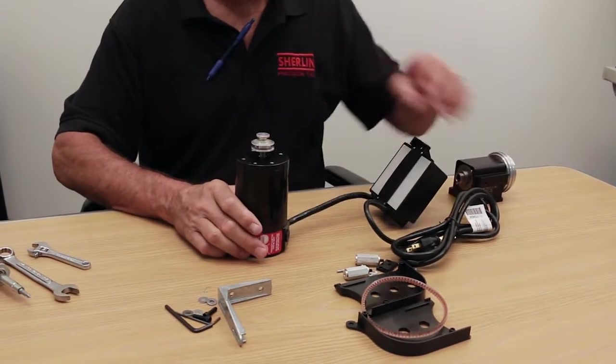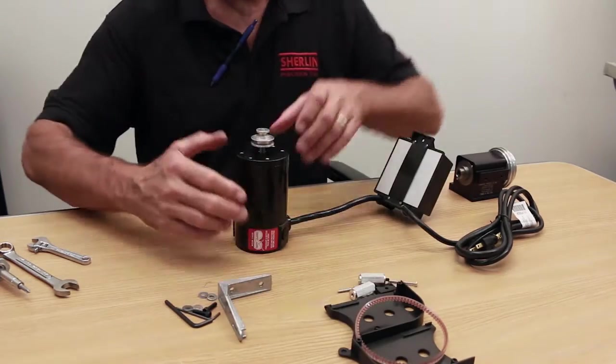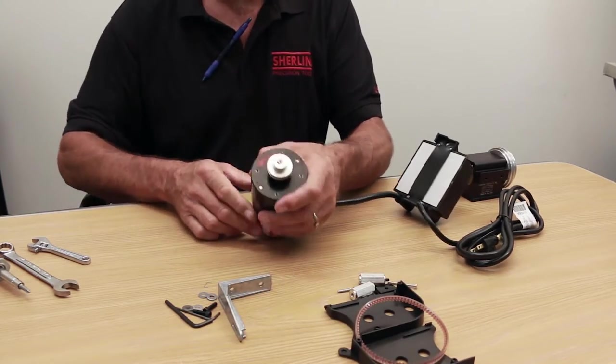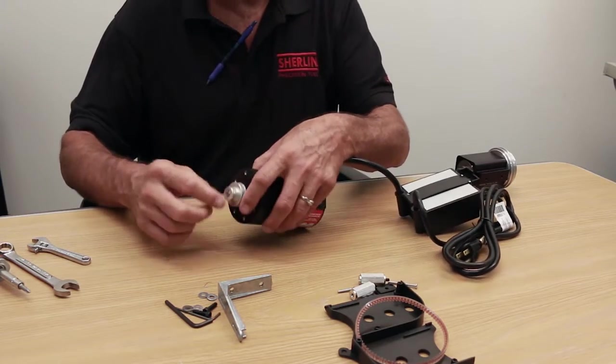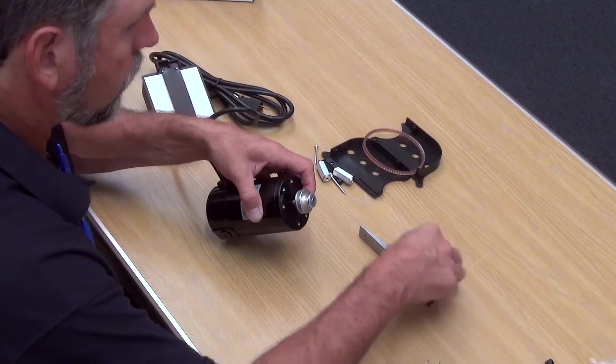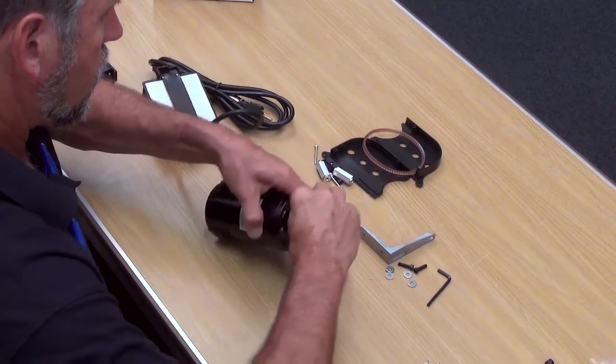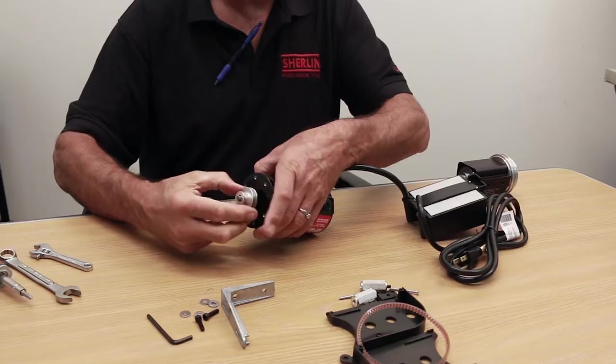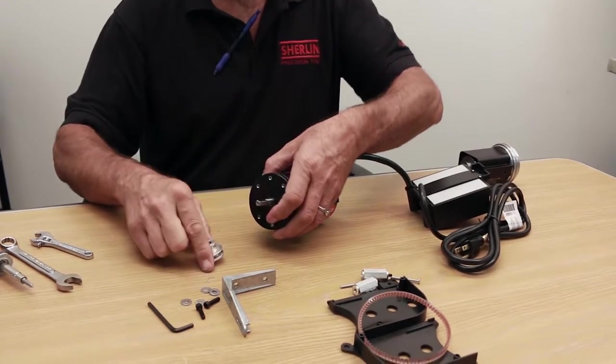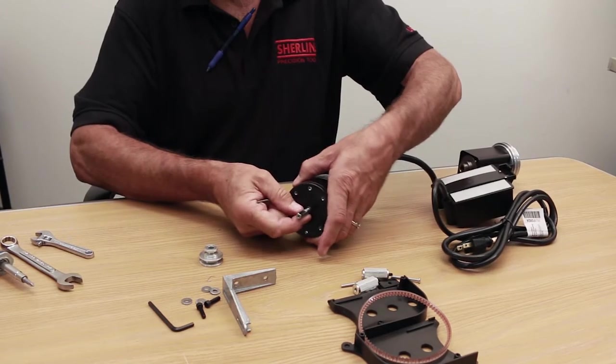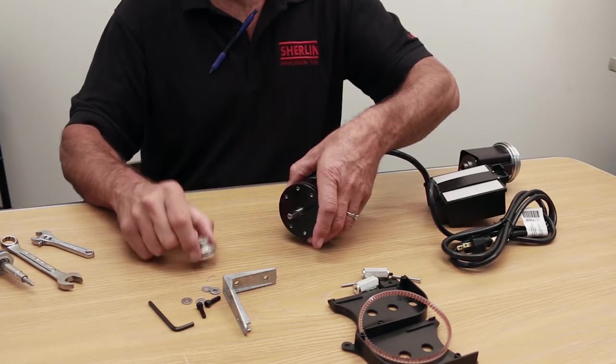You'll notice that the pulley is already on. It's going to have to come off in order to assemble the speed control. However, right now it's set up in the correct way with the set screw going into the flat on the shaft, which is very critical. Take this off, loosen it just enough to get it off of there. And you'll notice that the shaft does have a flat on it which is supposed to be lined up with the set screw that's on the pulley.